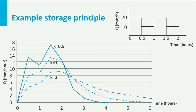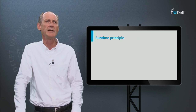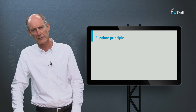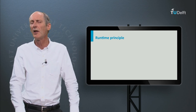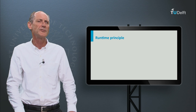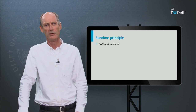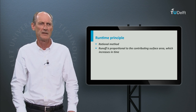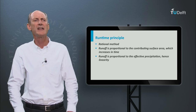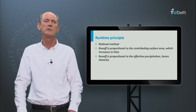If a catchment is not groundwater dominated, but rather dominated by fast runoff — for instance a paved area, or a relatively impervious area, or a hillslope with underlying impervious hard rock — then the runtime principle can be very useful. This approach is also called the rational method, whereby the runoff is proportional to the surface area contributing to the runoff. This area increases over time as an ever larger area of the catchment contributes to the runoff, depending on the time needed for the water to reach the outfall.